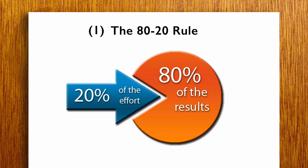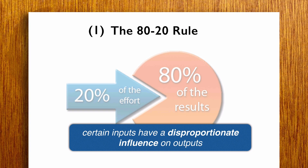In business, it might imply that 80% of your sales come from 20% of your customers, or 80% of your company's profits come from 20% of the time your staff spend, or 80% of customer complaints come from 20% of your customers. The exact percentages aren't important. The point is that certain inputs have a disproportionate influence on outputs, and knowing what those inputs are can be very important if you're looking to diagnose problems in your organization or optimize performance.